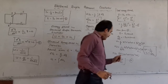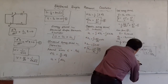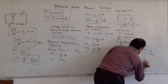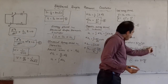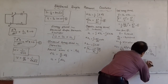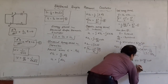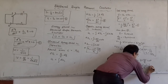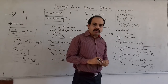We can also write the expression for total energy in terms of L. Since C = 1/(Lω²), substituting gives U = Q₀²Lω²/2. So the two equivalent expressions for total energy stored in the electrical simple harmonic oscillator are U = Q₀²/2C and U = Q₀²Lω²/2.